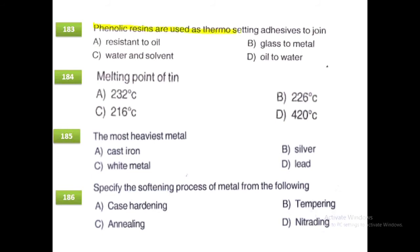Phenolic resins are used as thermosetting adhesives to join glass to metal. The melting point of tin is 232 degrees Celsius. The exact answer is 231.9 degrees Celsius.